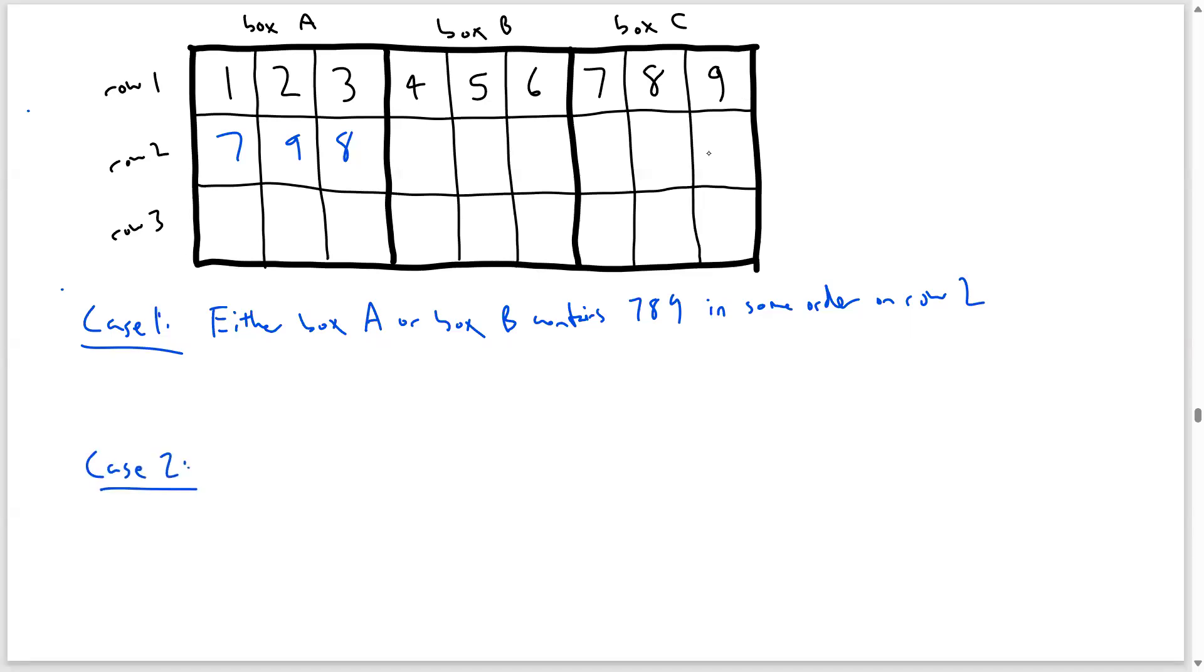Our second case is if on row 2, the numbers 7, 8, 9 are not evenly distributed in either box A or box B. Let's say box A contains two of them and box B contains 1 of 7, 8, 9 or vice versa. So case 2 is that on row 2, one of box A or box B contains two of the numbers 7, 8, 9, and the other box contains one of them.